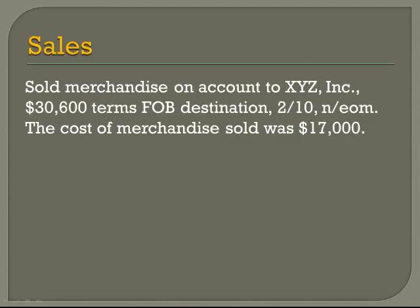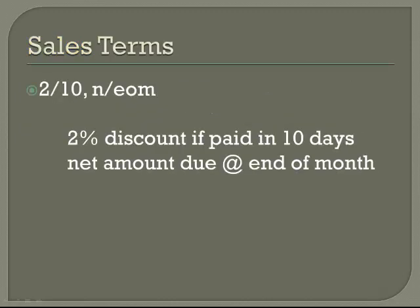Let's review those terms quickly. The 2/10 stands for a 2% discount if the bill is paid within 10 days. And the N/EOM stands for the net amount is due at the end of the month. Another way that could be written is 2/10 N/30, which is still the 2% discount, but the net is due within 30 days rather than at the end of the month.